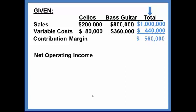Now we could stop here, but later in the problem we are going to need to know income. So I'm going to go ahead and finish this income statement. We were told in the problem that fixed costs are $90,000. So this leaves operating income of $470,000.